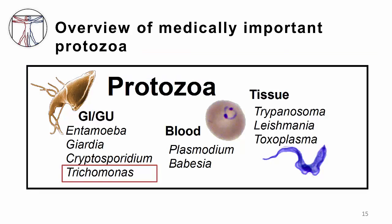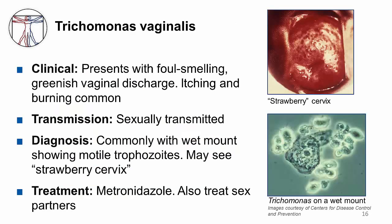The last organism we are going to talk about in this module is Trichomonas, which is a genitourinary protozoa. Trichomonas vaginalis causes trichomoniasis. Women may present with a watery, foul-smelling, greenish vaginal discharge, accompanied by itching and burning. Men may also have infection, although this is usually asymptomatic. Infection is sexually transmitted, so when a woman is diagnosed with Trichomonas, we advise partner treatment as well.